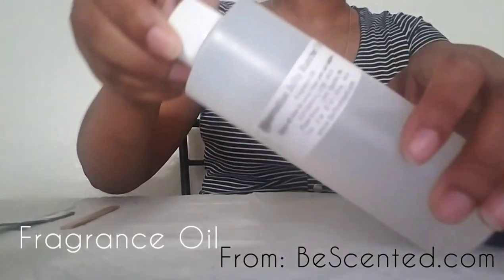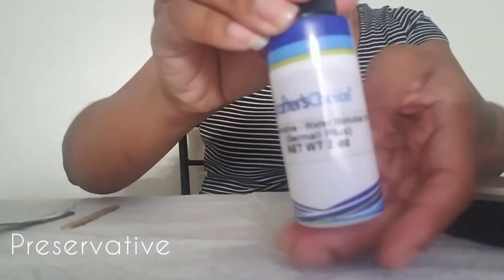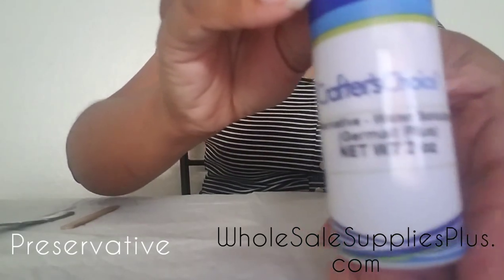Right here is my fragrance oil. I'm using Jolly Rancher watermelon—smells just as sweet as the candy. This is my preservative I got from Wholesale Supplies Plus. If you're making any kind of body products, they have everything you need.